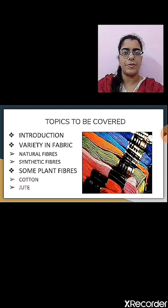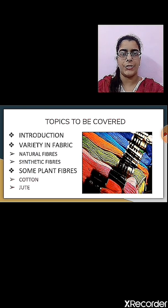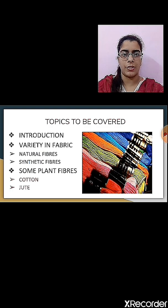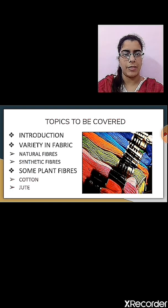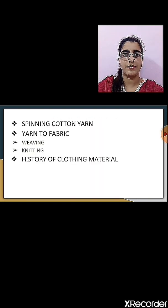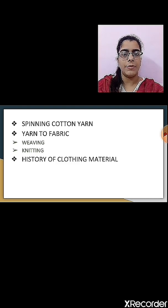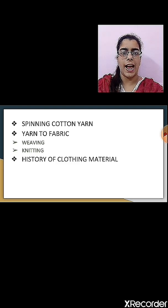Let's see what are the different topics we are going to study under this chapter. First is Introduction, then we will see the variety in fabrics — what different fabrics we use to make our cloth. Under this, we will study two more subtopics: natural fibers and synthetic fibers. Then we will see some plant fibers like cotton and jute. Another topic is the spinning of cotton yarn, and then we will see how fabric is made from yarn by two methods: weaving and knitting.